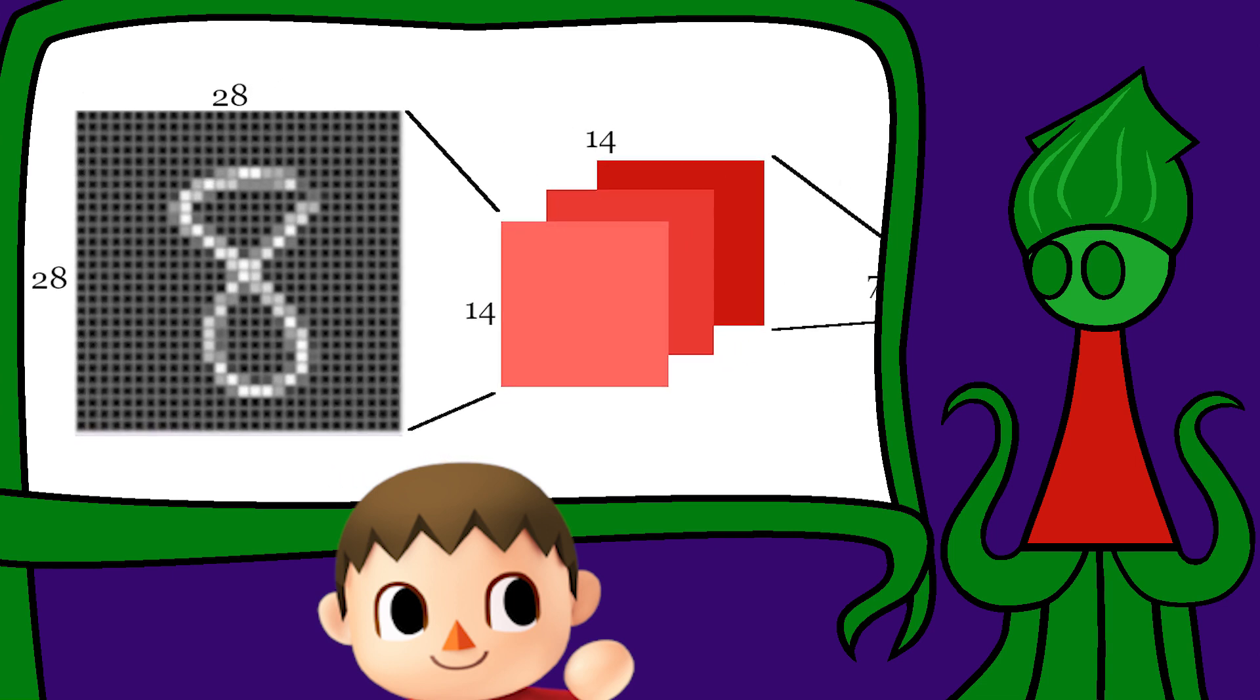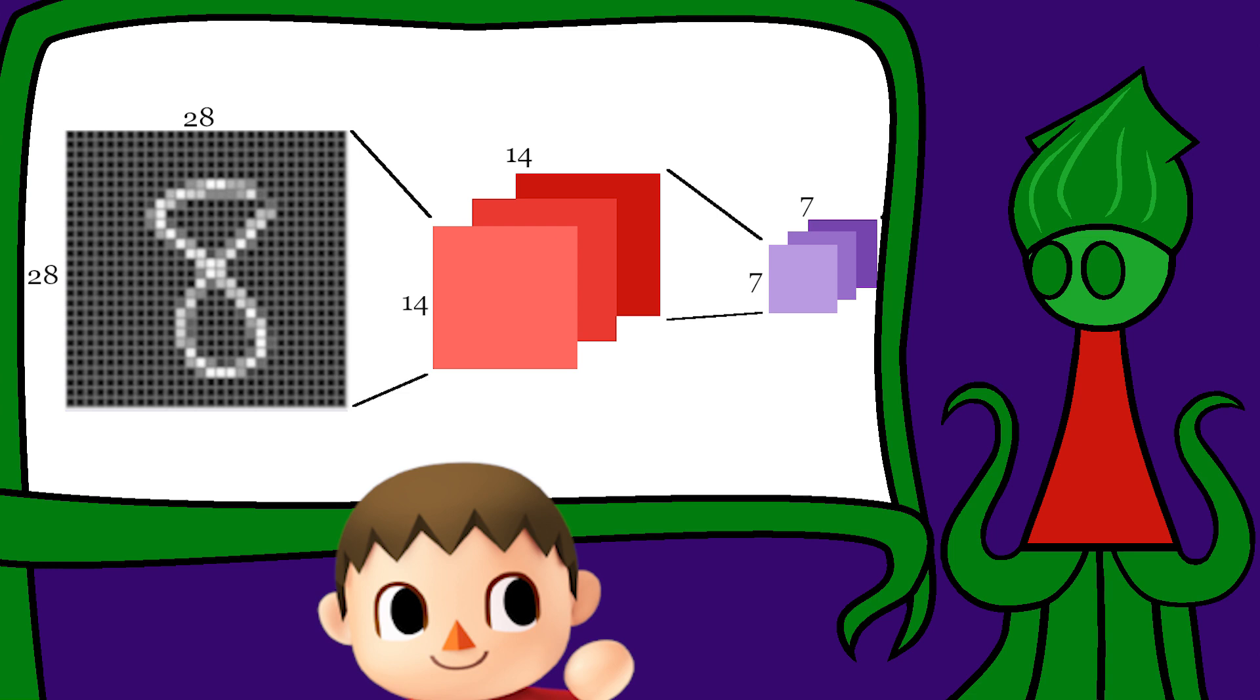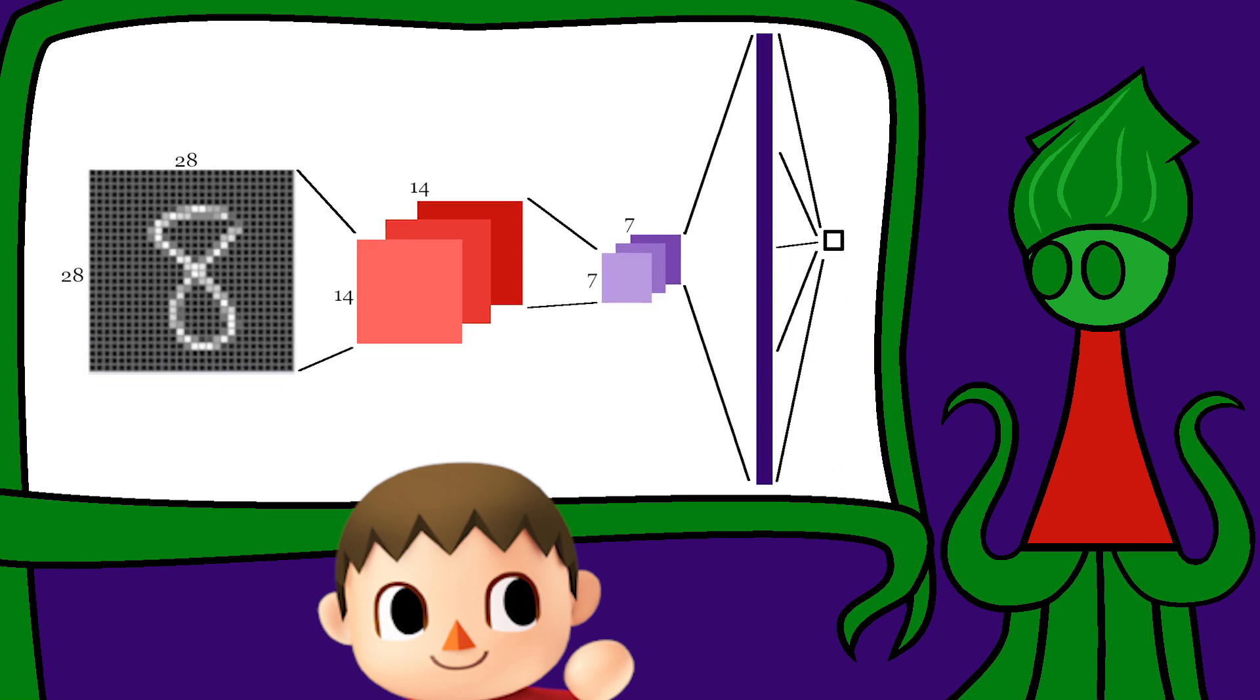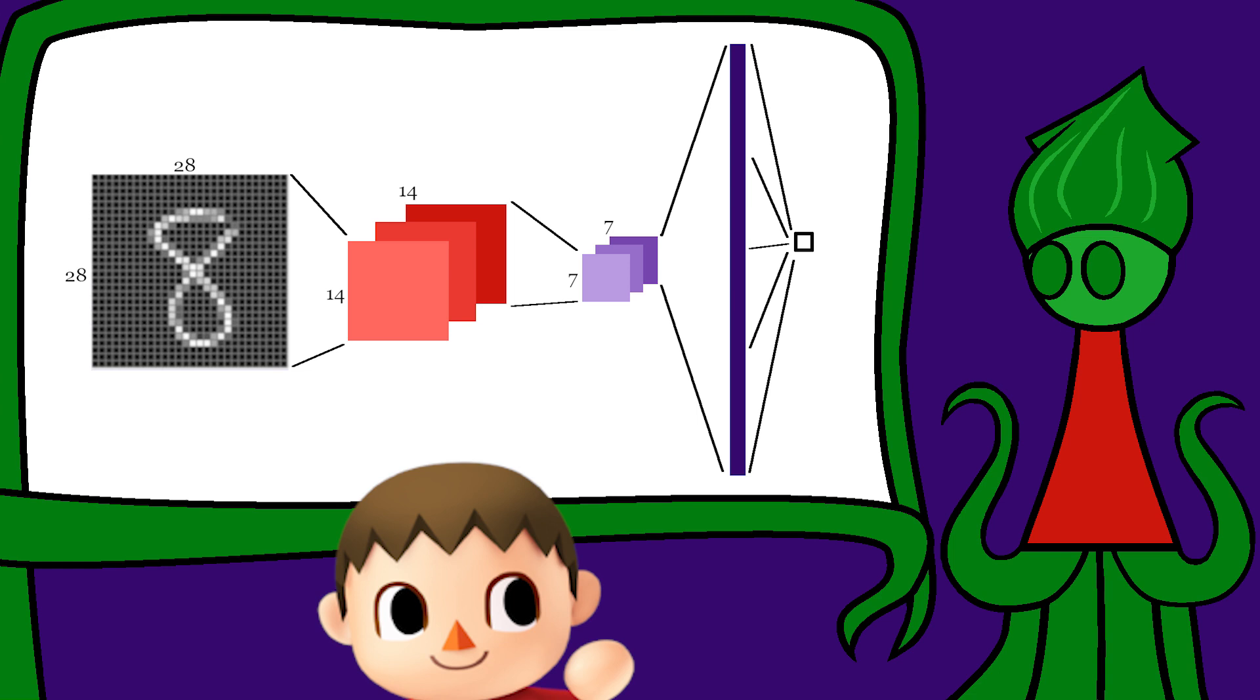The tutorial does this twice, so 14 by 14 is reduced to 7 by 7. Then this matrix is flattened, and a connected layer results in a single value. 0 if the image is really a handwritten number, and 1 if the image is a fake.